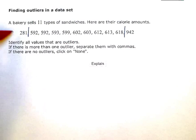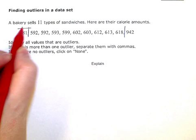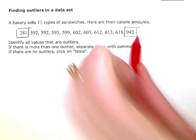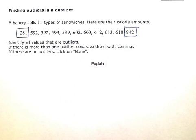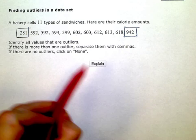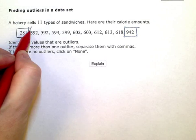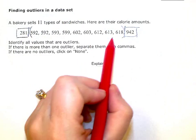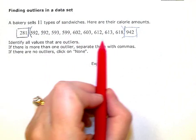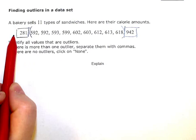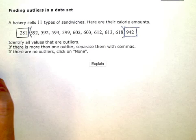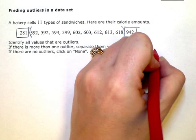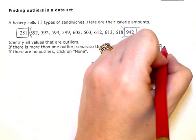So these two — the 281 and the 942 — are what are called the outliers, because they are really pretty far away from the rest of the data, from the main group of data here. So I have two outliers. We're gonna put 281 and 942.